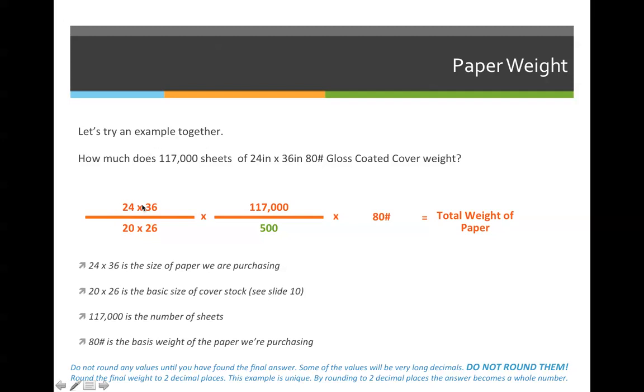So this is the size of paper we're purchasing, which we identified as 24 inches by 36 inches. We're going to divide that by the basic size of the paper. We also identified that as being 20 by 26. We're purchasing 117,000 sheets of paper. We'll divide that by 500 because we always divide by 500. And we'll multiply that by the basis weight.